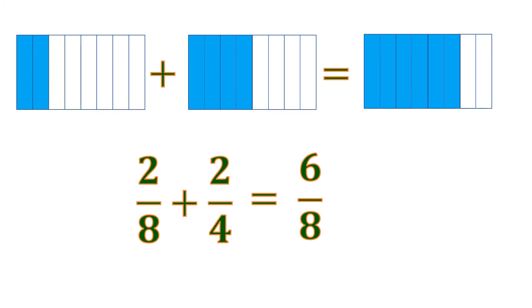But if we remove some slices from 6 eighths, it becomes 3 shaded parts out of 4. So 6 eighths can be reduced into 3 fourths.